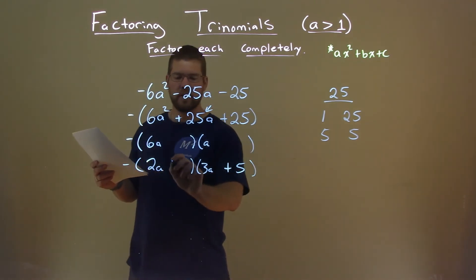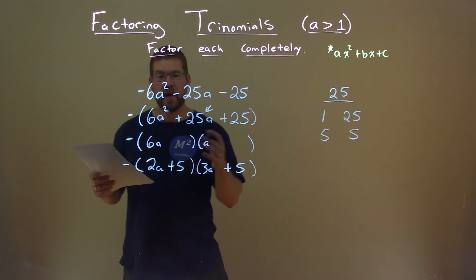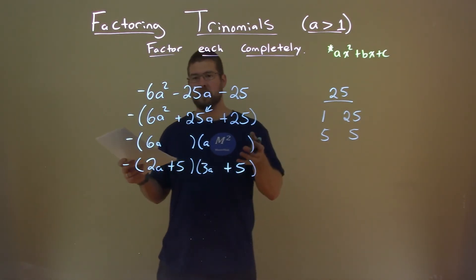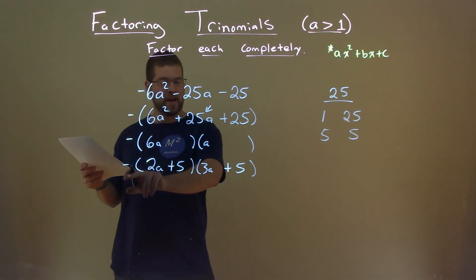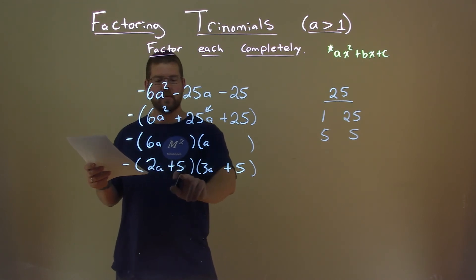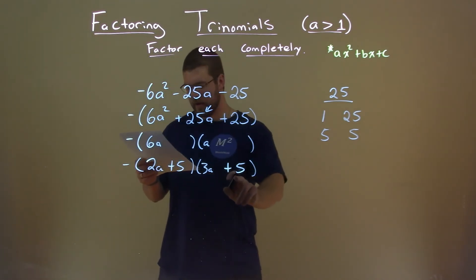So if we put a plus 5 here and a plus 5 here, we have our answer. That works. It's in factored form. Negative, don't forget it: (2a plus 5) times (3a plus 5).